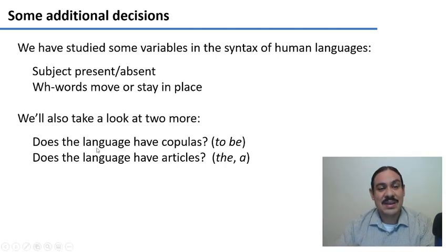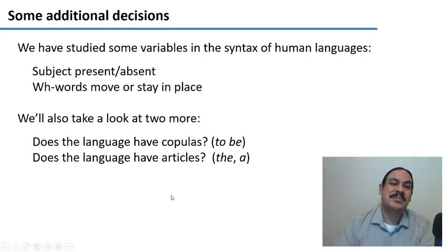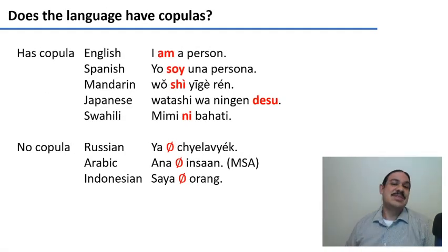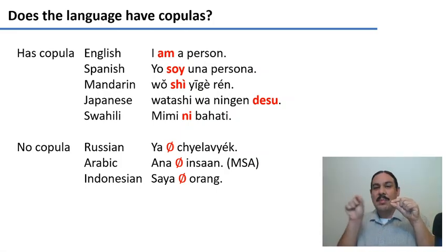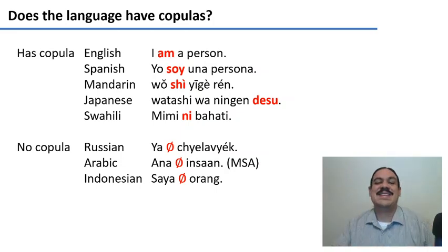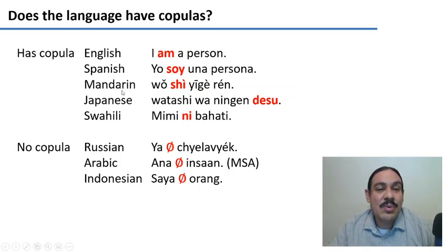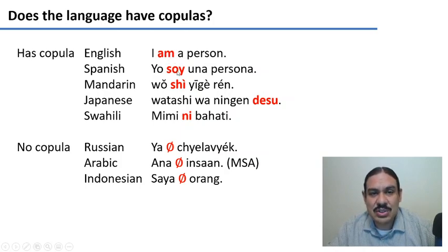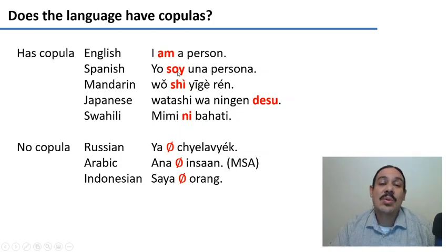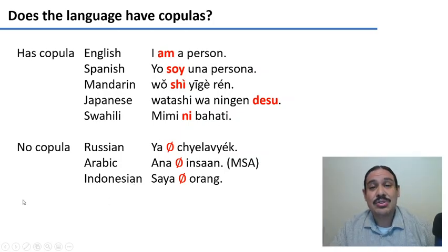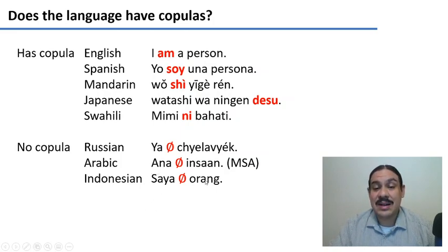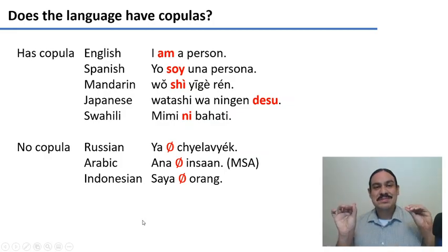Let's look at two final decisions you have to make. Is your language going to have copular verbs like "to be"? And is your language going to have articles like "the" and "a"? Copulas are words like "to be" which link a noun and its property — for example, "I am a person." In languages that do have copulas, like English, Spanish, Mandarin, Japanese, and Swahili, there's some element that links the two words. In Japanese, the order is S-O-V: I, person, am. But there are languages that don't have copulas and they get along just fine. In Russian you only need to say "ya chelovek" — I, person. Same as in Arabic "ana insan" and Indonesian "saya orang" — no verb, just I, person. No copula.